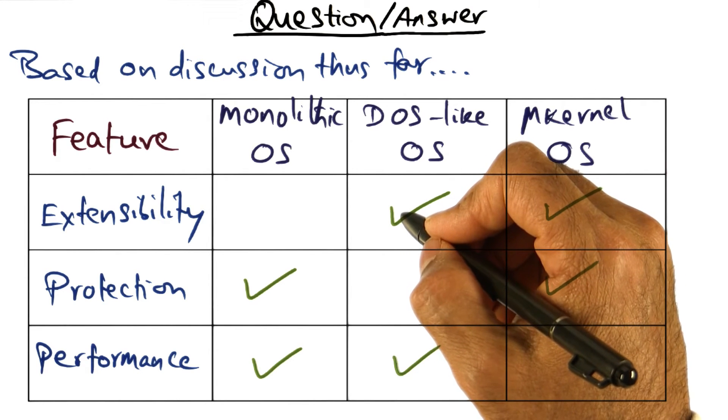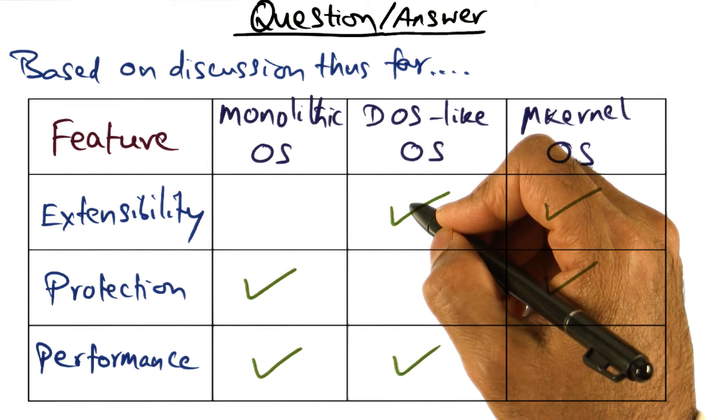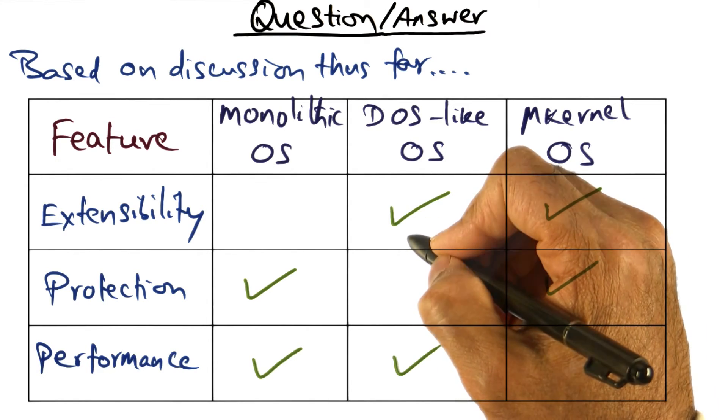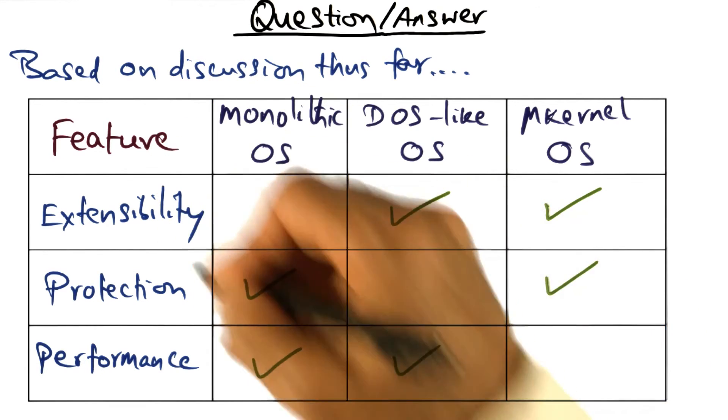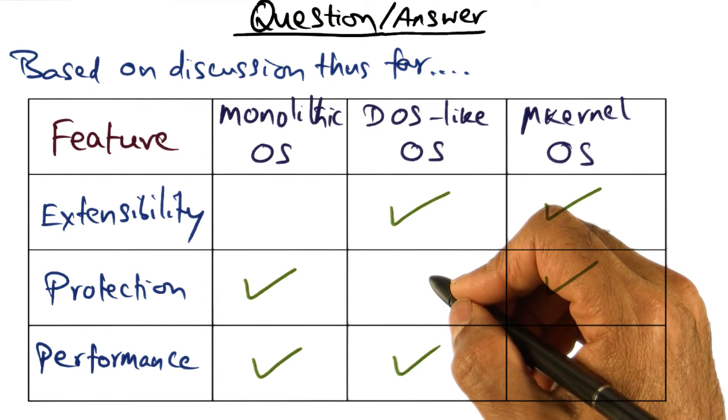It is also easily extensible because you can build new versions of system services to cater to the needs of specific applications. But on the other hand, it fails on the safety attribute because there is no boundary separating the kernel from the user space.